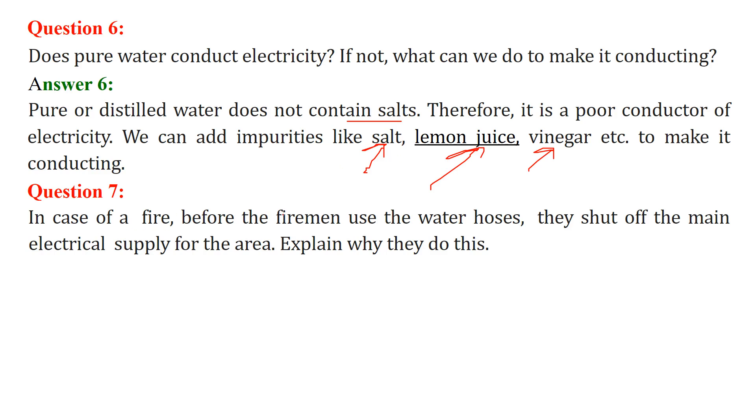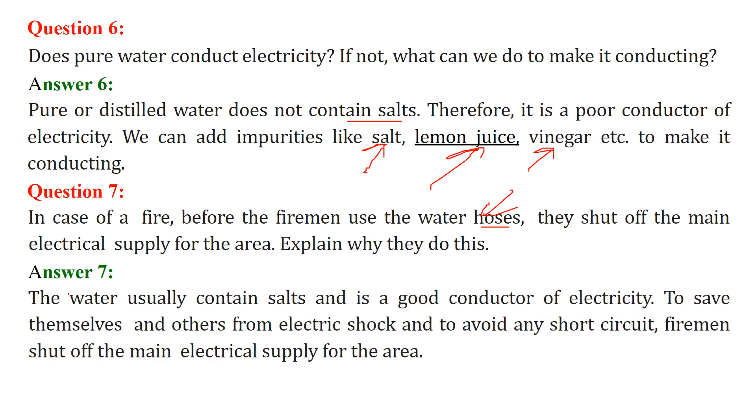In case of a fire, before the firemen use the water hoses, they shut off the main electrical supply for the area. Explain why they do this. They do this to avoid any kind of shock. The water usually contains salt and is a very good conductor of electricity. To save themselves and others from electric shock and to avoid any short circuit, firemen shut off the main electrical supply for the area.